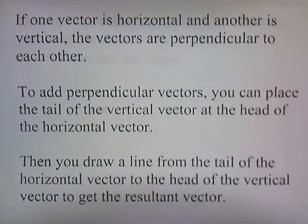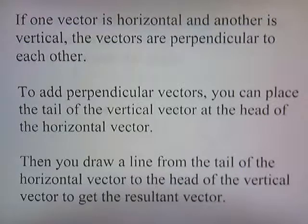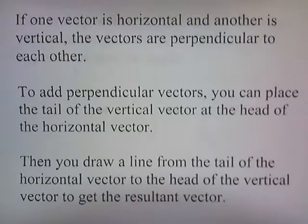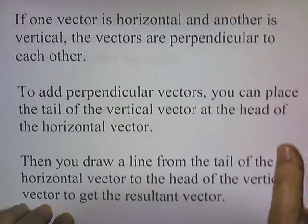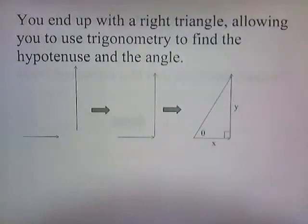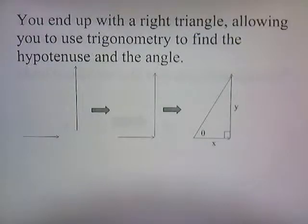If one vector is horizontal and another is vertical, the vectors are perpendicular to each other. To add perpendicular vectors, you place the tail of the vertical vector at the head of the horizontal vector. Then you draw a line from the tail of the horizontal vector to the head of the vertical vector to get the resultant vector. You end up with a right triangle, allowing you to use trigonometry to find the hypotenuse and the angle.